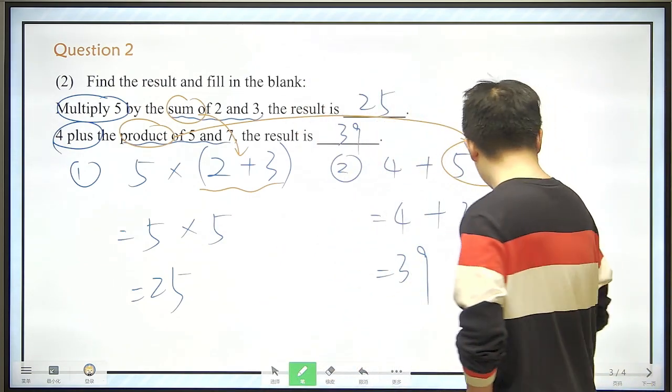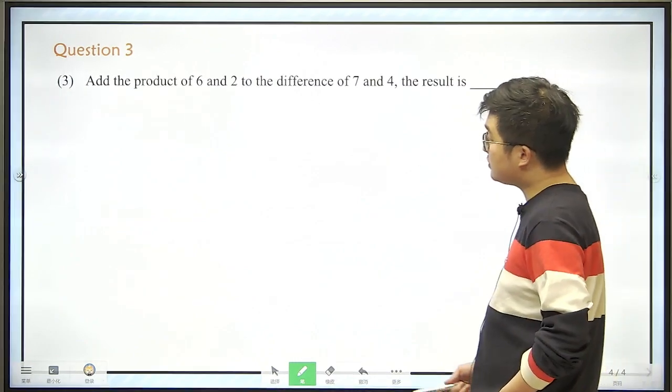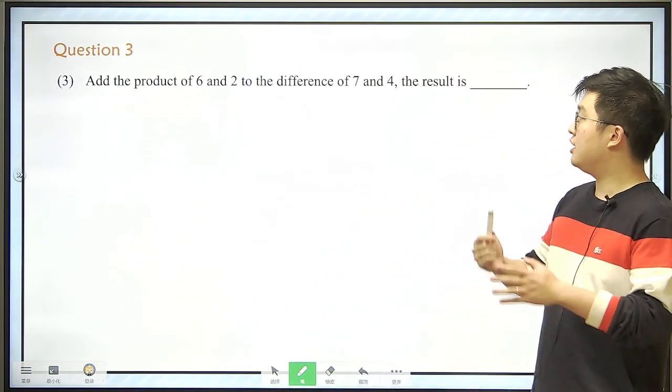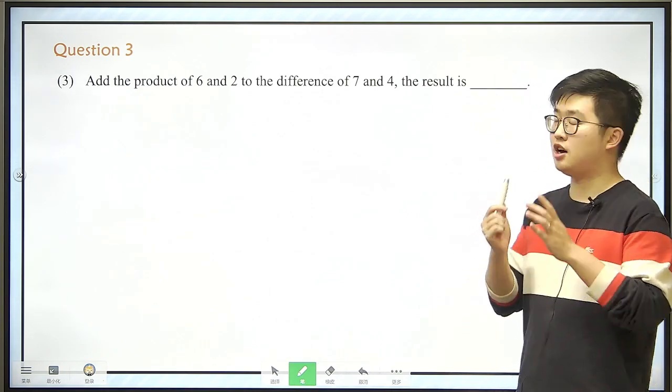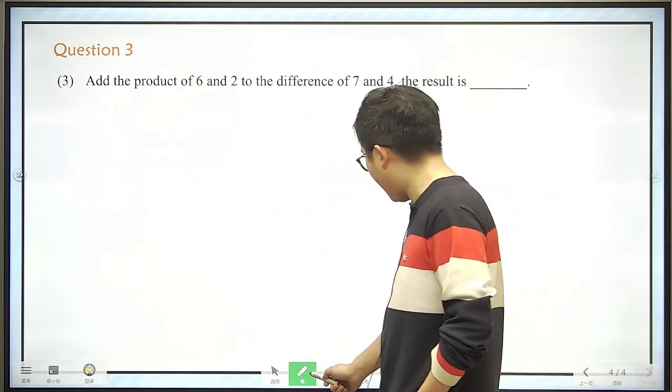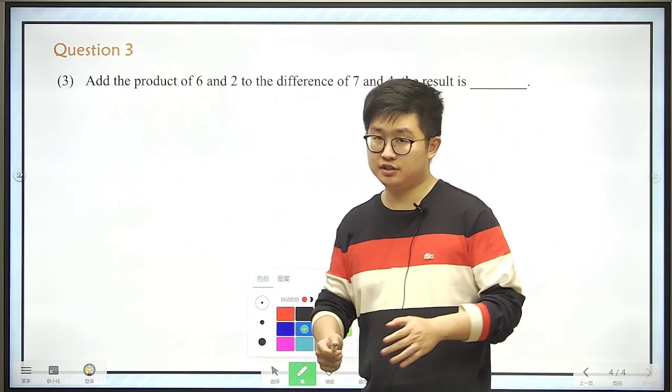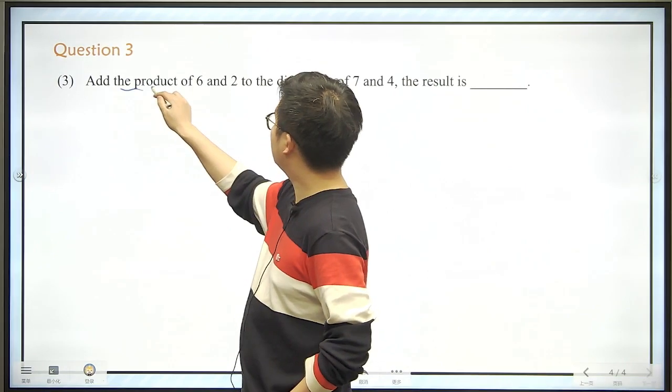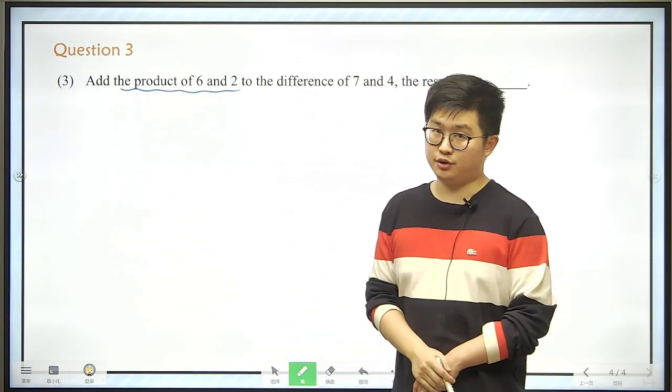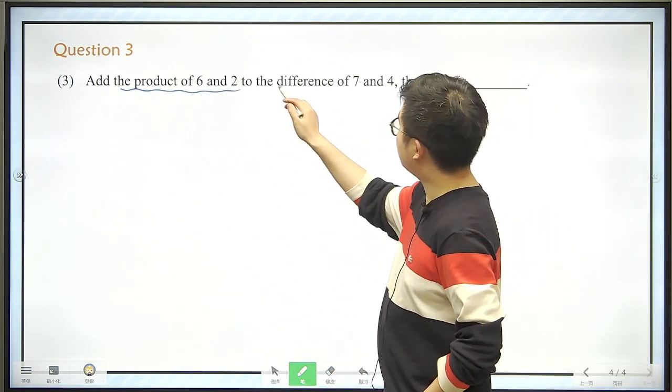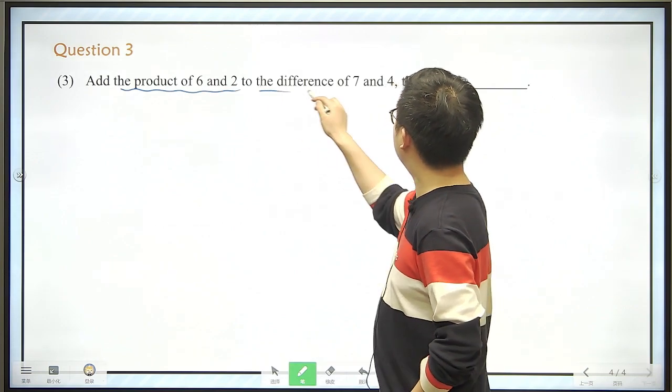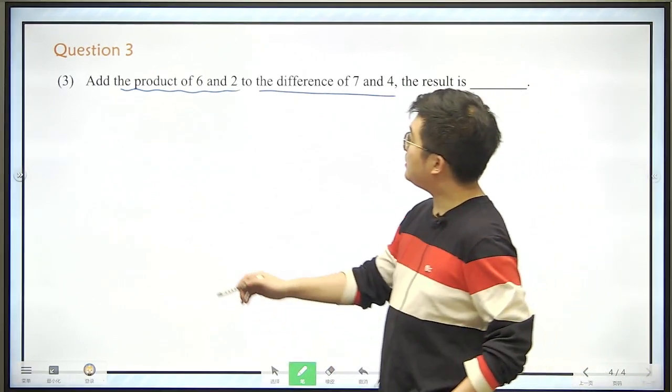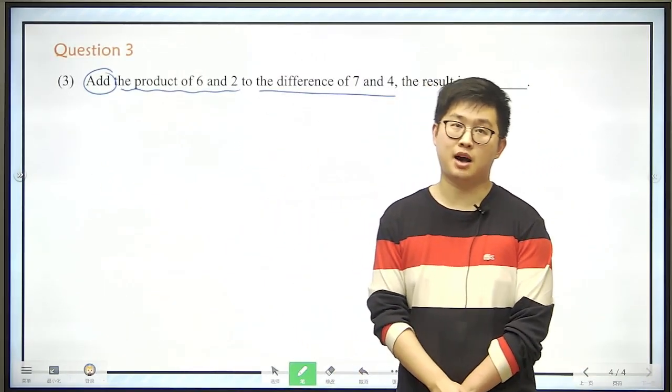And you will be fine. And our last question, add the product of 6 and 2 to the difference of 7 and 4. So now, we are seeing two descriptions here. The first is the product of 6 and 2. The next one is the difference of 7 and 4. And in the end, we need to add them, right? We need to add them up.